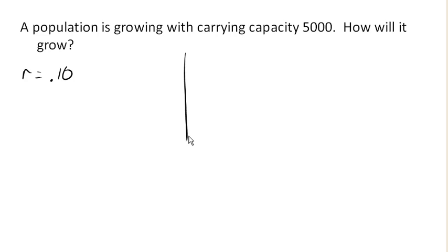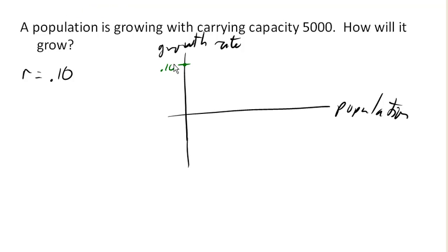So now here's the idea. Is if we were to look at the population that currently exists and the growth rate, then the idea here is that if the population is very, very small, then the population is gonna grow at about 10% like a normal exponential population.